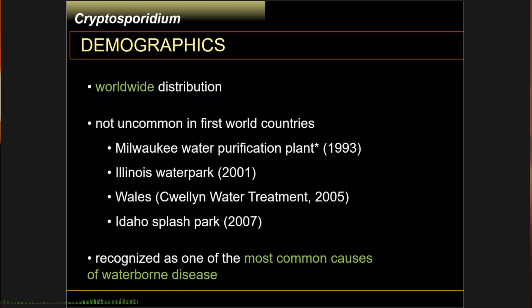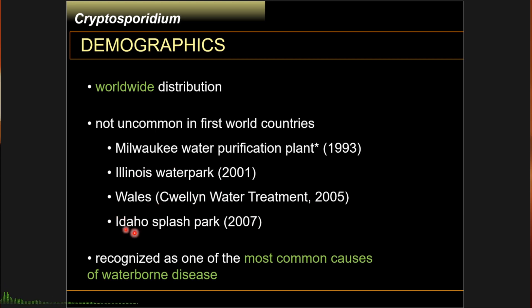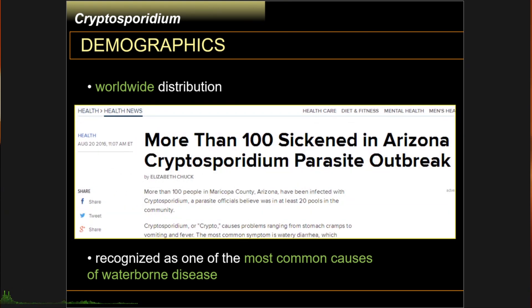Cryptosporidium is distributed globally. In third-world countries it is not as recognized due to other prevalent diarrheal infections, but in first-world countries it is commonly reported as outbreaks — for example, at water purification plants and water parks. The largest documented waterborne disease outbreak in U.S. history happened at the Milwaukee water purification plant in 1993, where about 400,000 people were affected and approximately 100 people died. More recently, in August 2016, over 100 people were infected in a Cryptosporidium outbreak in Arizona.